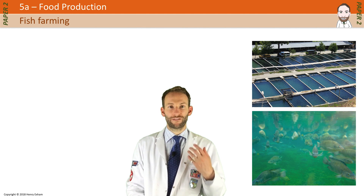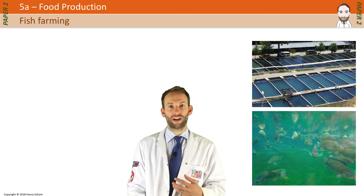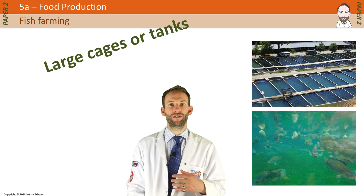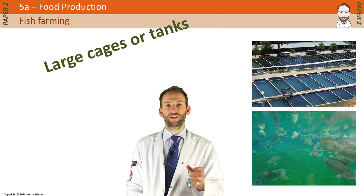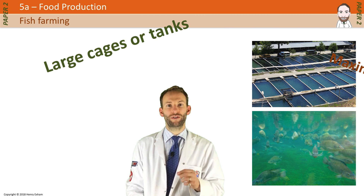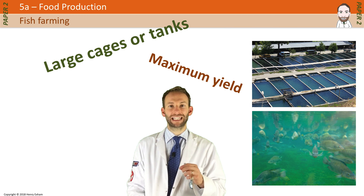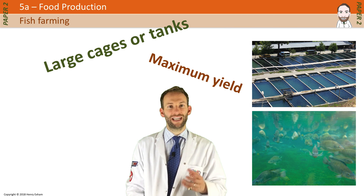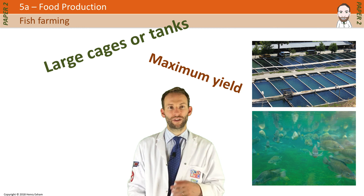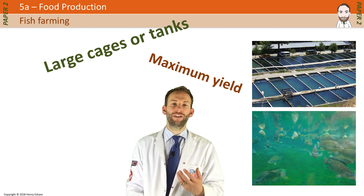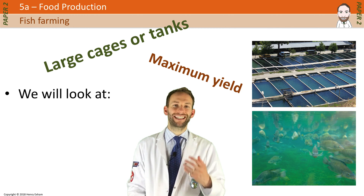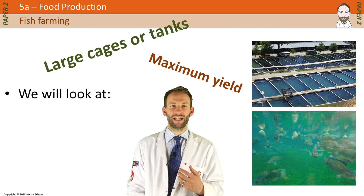Fish are bred in large cages or tanks to stop them using as much energy swimming about. All the conditions can be monitored and controlled in order to enable maximum yield in as short a time as possible. We are going to look at a few things that you can do in fish farms to guarantee a higher yield.